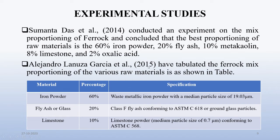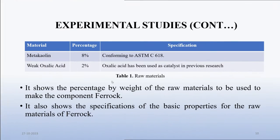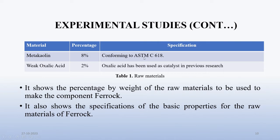Algenro Lanza Garcia in 2015 tabulated the Ferroc mix proportioning as follows: iron powder 60% (waste metallic iron powder with a medium particle size of 19.03 micrometers), fly ash or glass 20% (Class F fly ash conforming to ASTM C618, or ground glass particles), limestone 10%, metakaolin 8% (conforming to ASTM C618), and weak oxalic acid 2% used as a catalyst. This shows the percentage by weight of raw materials and their basic specifications.